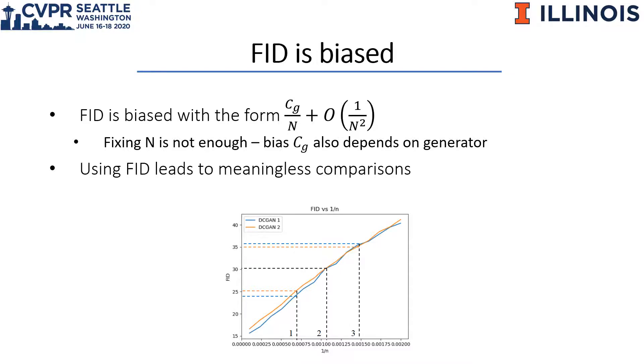This bias is serious — it confuses comparisons. In the figure, comparing FIDs at different points leads to different rankings.